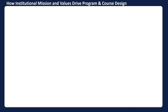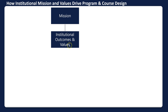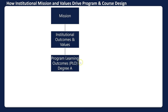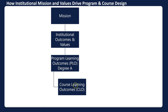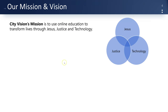One of the big pictures is understanding how institutional mission and values drive program and course design. You have the mission, then the institutional outcomes and values, then a program learning outcome — such as addiction counseling outcomes or an MBA program — and then your course learning outcomes fit under that. Everything is driven by the mission and values. City Vision's mission is to use online education to transform lives through Jesus, justice, and technology, and to really understand how this plays out you have to unpack that.